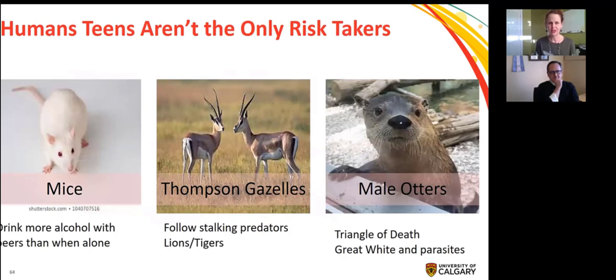First, as Frank also alluded to earlier, human teens aren't the only risk takers. So all mammal adolescents engage in risk taking. So a few examples here are mice who tend to drink more alcohol when they're with their peers than when they're alone. Thompson gazelles, who instead of running away and hiding from lions and tigers, stomp themselves. And again, this highlights a little bit of the adaptiveness. So at that point, if they do this effectively, they've gained really important information about lions and tigers that they can use later to avoid them more effectively. And the last one is only males. Male otters swim through what's known as the triangle of death that's filled with great white sharks and parasites. So again, we are not alone in having teens who engage in risk taking.